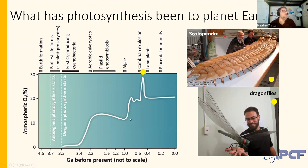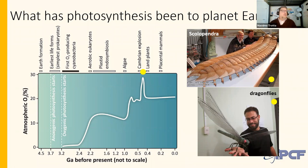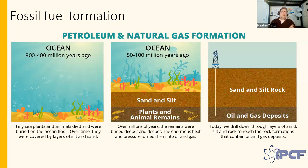At a certain point, the evolution on Earth and the appearance of new photosynthetic species brought us to the Cambrian explosion, where the oxygen level reached roughly 30 percent of the overall atmospheric composition. At that time, the amount of oxygen was so high that animals were enormous — scolopendras, now mostly five centimeters long, were longer than two meters, and dragonflies were so large you couldn't cover them with your hand.